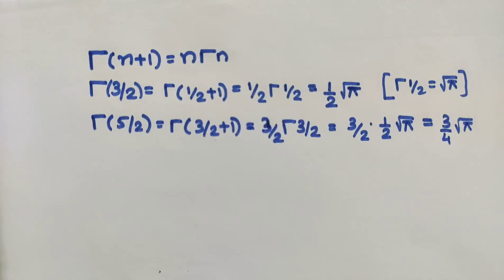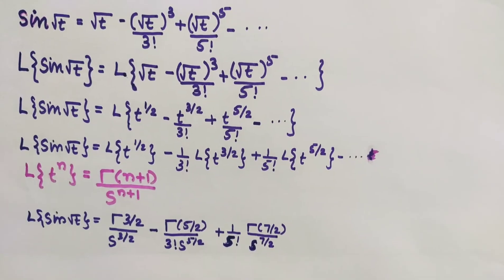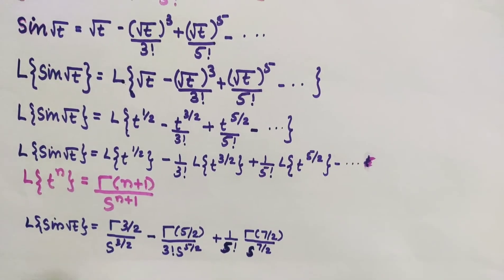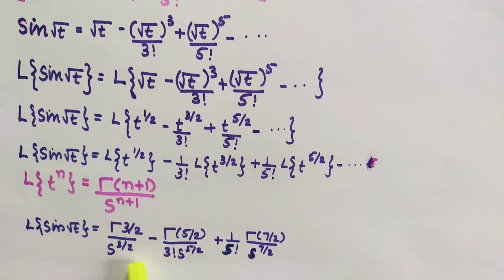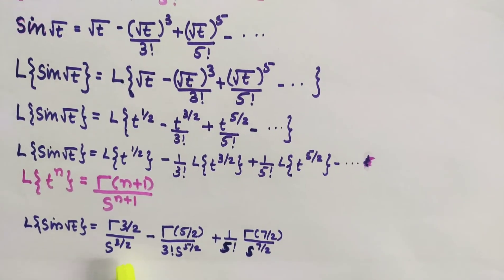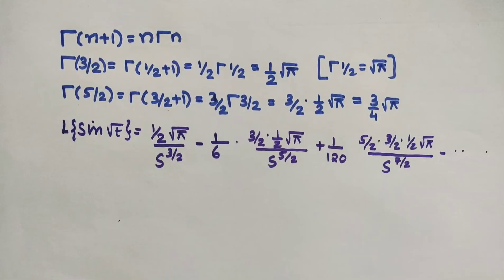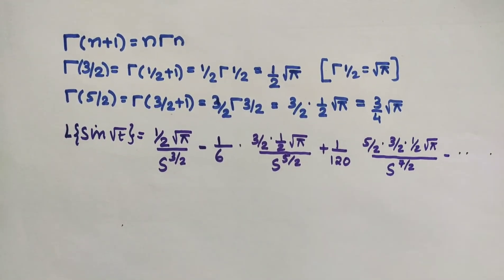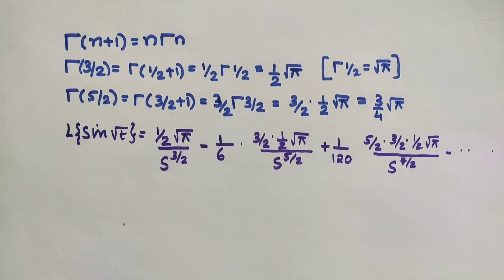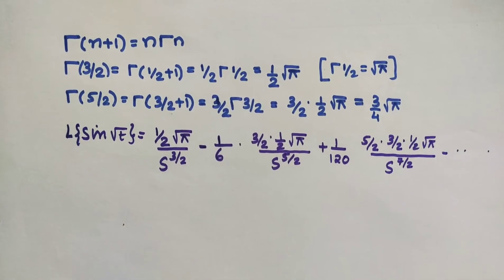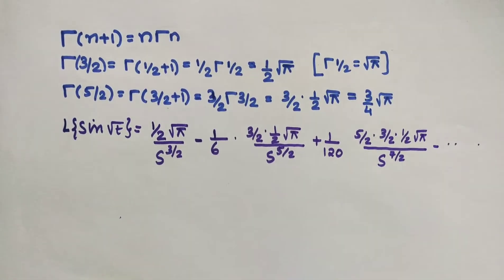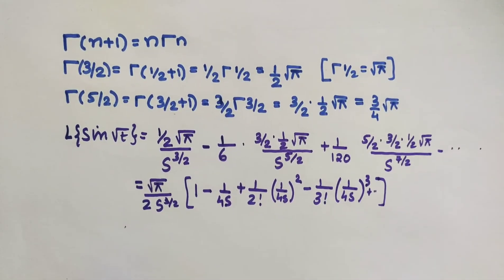Substituting the values of Γ(3/2), Γ(5/2), and Γ(7/2), we get the Laplace transform of sin(√t), with √π / (2s^(3/2)) common to all terms.